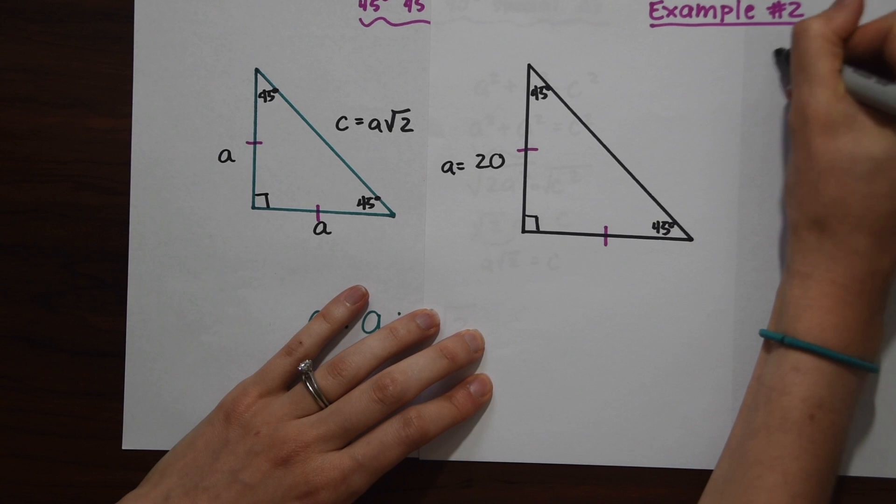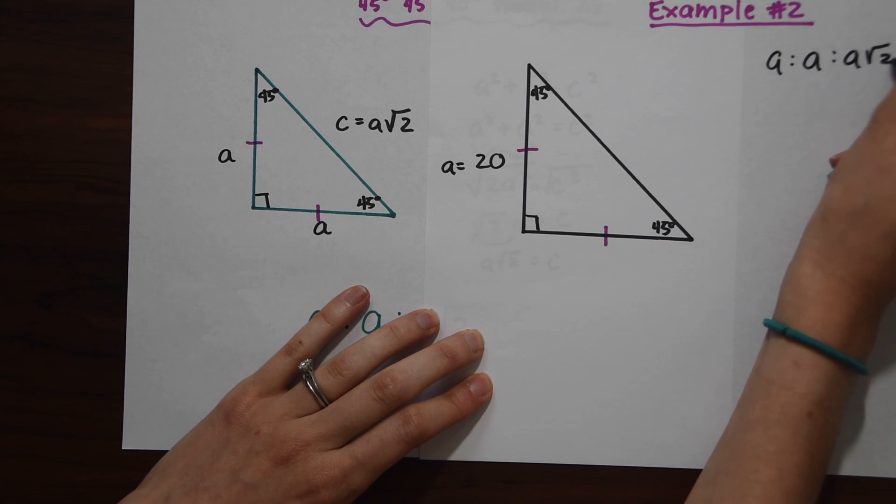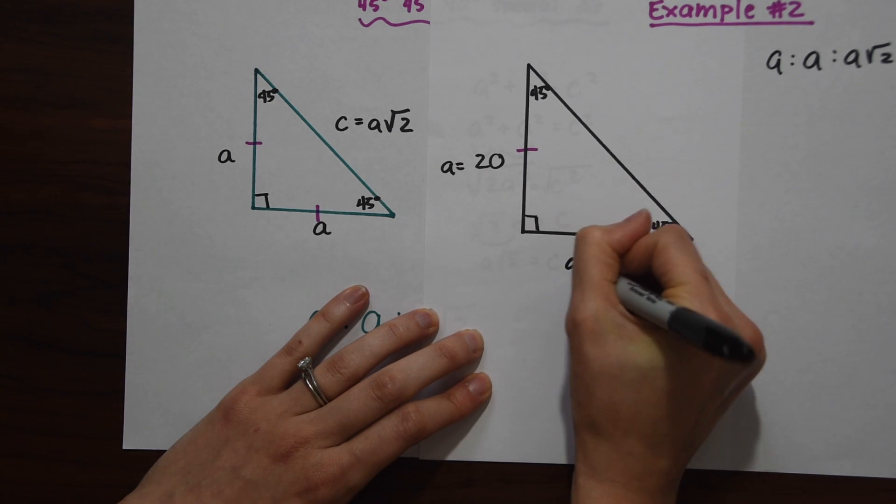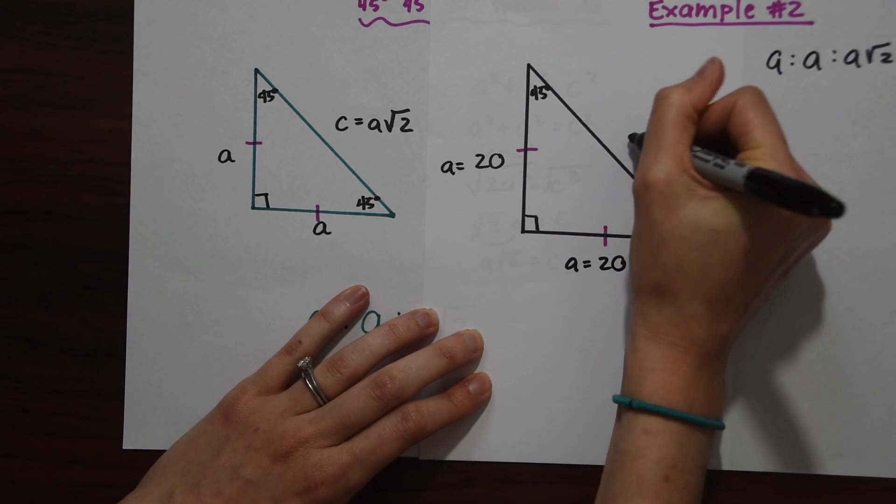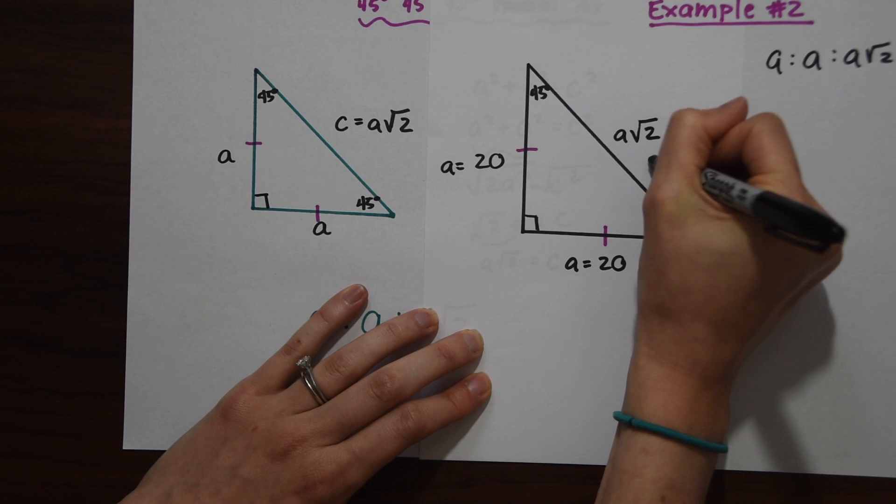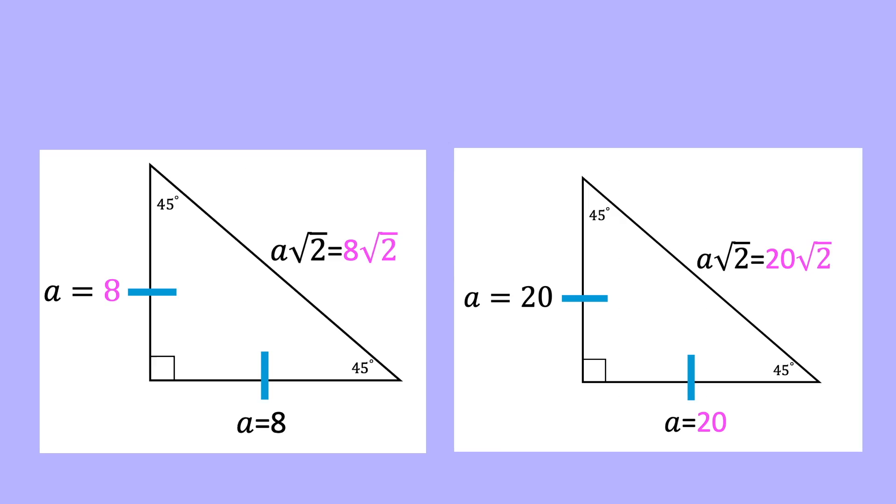We're going to look at our ratio a to a to a radical 2 and notice that these two sides are equal. We have a equals 20, and then we have a radical 2. We know the value of a here, so this is just going to be 20 radical 2. Check your solutions in case you missed anything or if anything was hard to read.